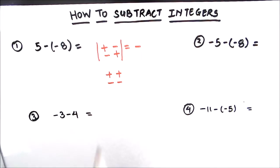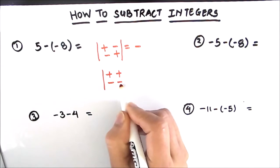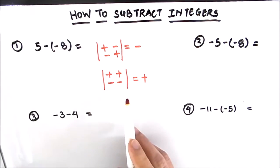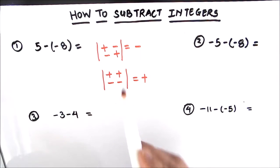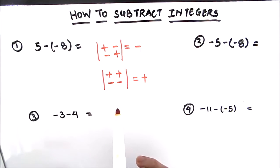Whenever the signs are the same — that is, two positive signs or two negative signs together — we'll add the two numbers. This sign rule follows for both addition and subtraction of integers. We need to take care that the resultant sign, or the final sign of the answer, will be the sign of the number which is bigger in numerical value.